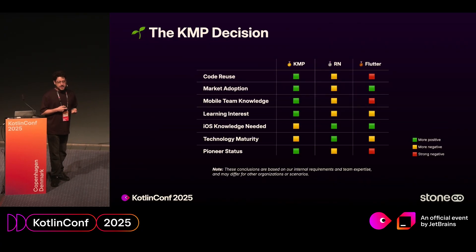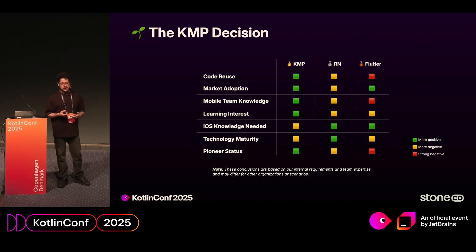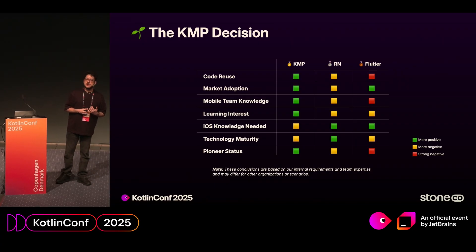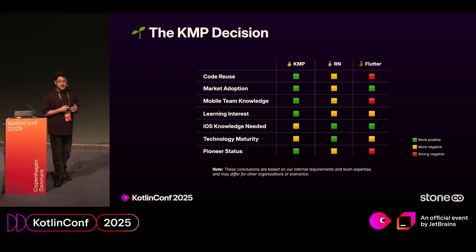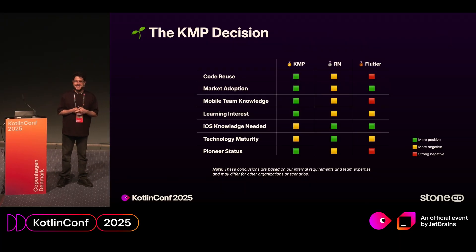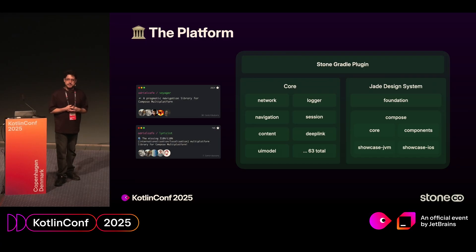This is a table about our specific use case — I put a remark there because it reflects our current scenario. We mapped many items like code reusability, market adoption, mobile team knowledge, learning interest, iOS knowledge needed, technology maturity, and pioneer status. As you can see, for our specific case, KMP really stands out based on all our metrics. After running lots of POCs, we were pretty much convinced KMP was the way to go, and we decided to use this technology at our organization. From that, we started layering our platform, which is composed of three main pillars.